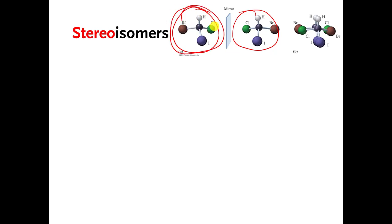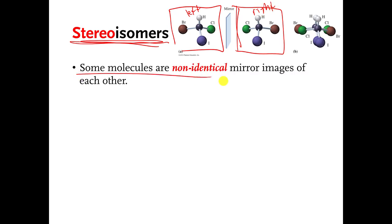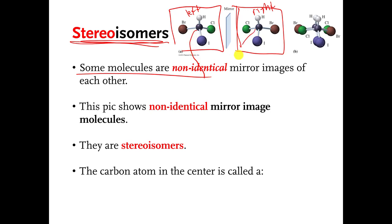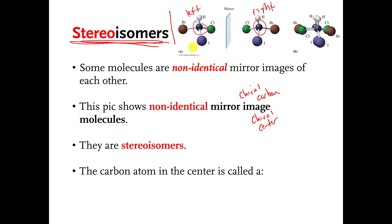The fact that you cannot do that means these two things are not the same. Because if you could spin this one and get all the colors to point the same way at the same time, then they would be the same. But you cannot do it. So these things, although they look an awful lot alike, are not the same — they are called stereoisomers of each other. This carbon in the middle has a special name: it is called a chiral carbon atom, sometimes called a chiral center.